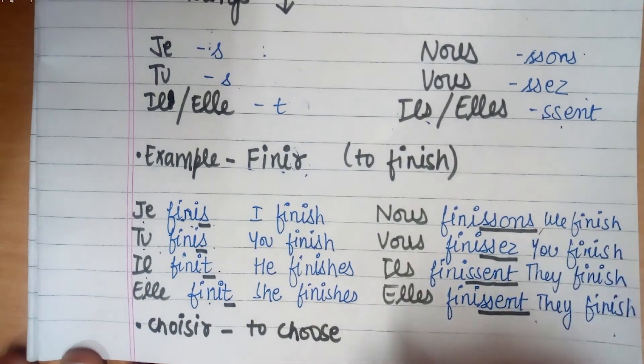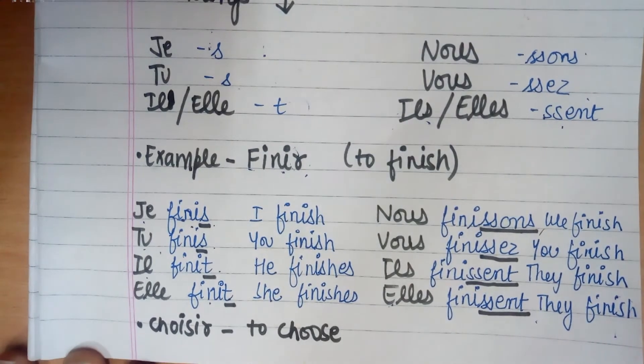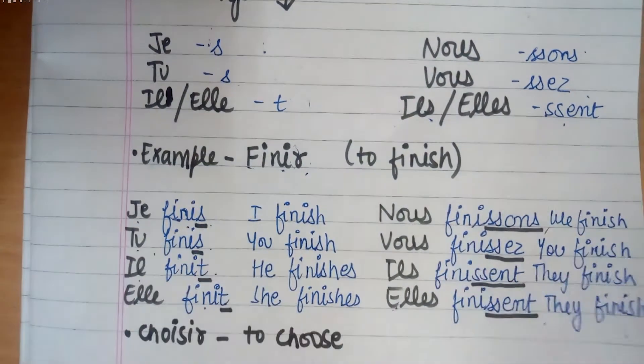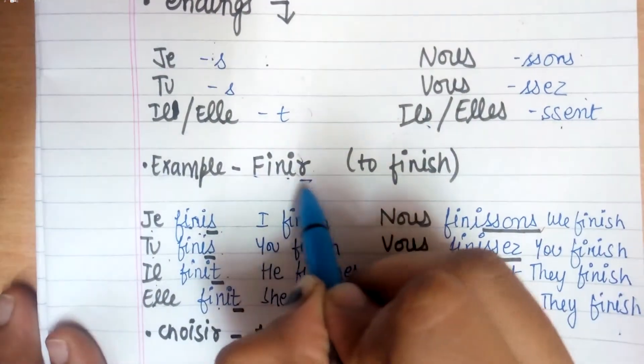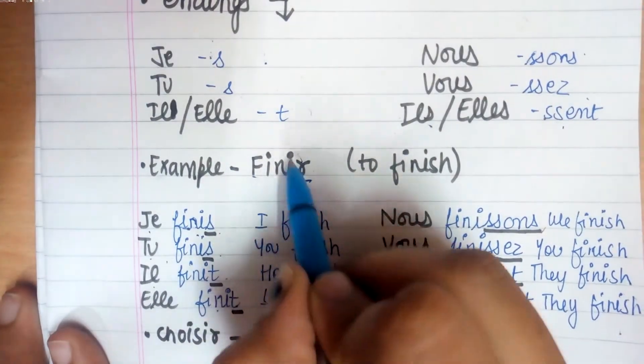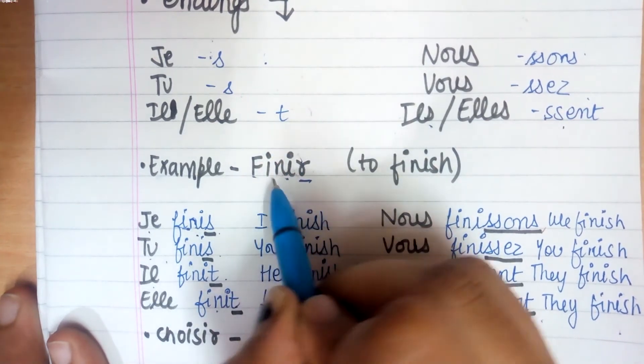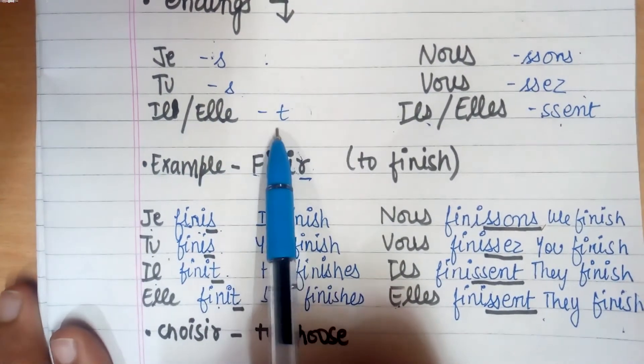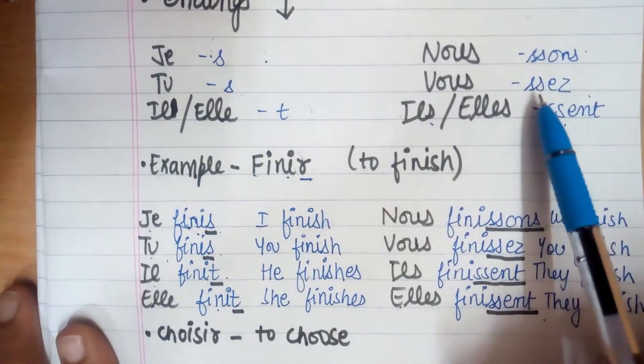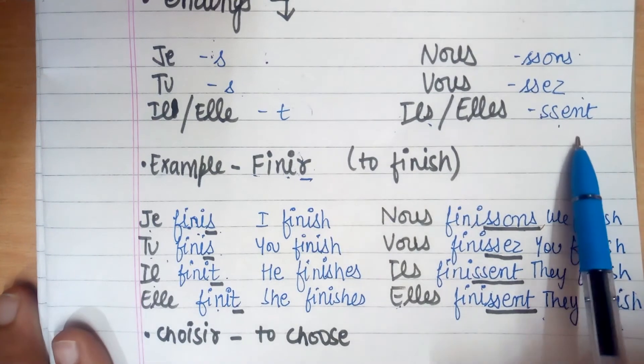Let's revise again. First step: remove IR. The remaining part will be its radical. In the radical we need to add endings: S, S, T, S-S-O-N-S, S-S-E-Z, S-S-E-N-T. That's how we conjugate the IR verbs.